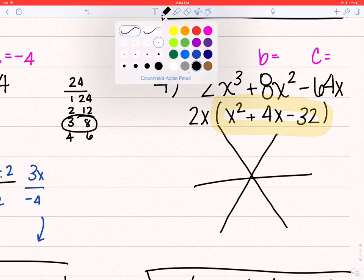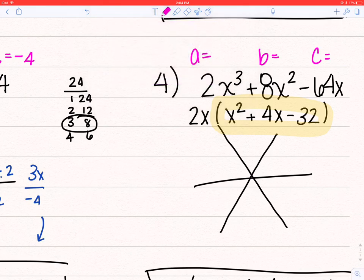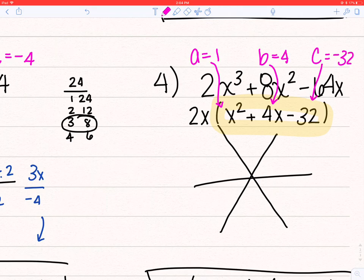So my a is 1, b is 4, and c is negative 32. So I'm going to have negative 32 on top, b on the bottom, a x, a x.